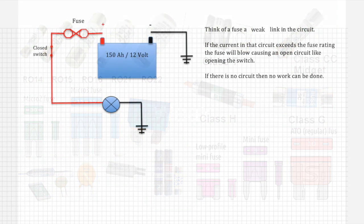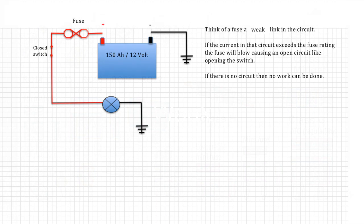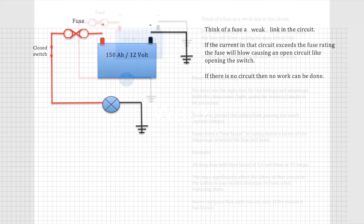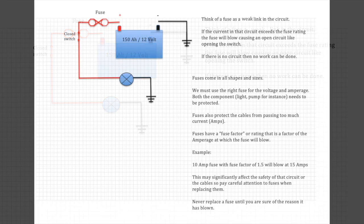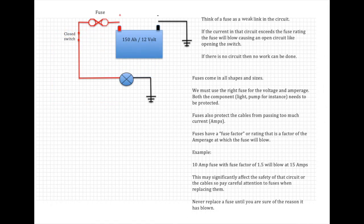So I said to think of a fuse as a weak link in a circuit. If the current in that circuit exceeds the fuse rating, the fuse will blow, causing an open circuit, like opening the switch in a way. If there is no circuit, then no work can be done. So we need to make sure we have the right fuse for the voltage and amperage. Both the component, the pump or light for instance, and the cable needs to be protected. Fuse also protects cables from passing too much current, in the same way.